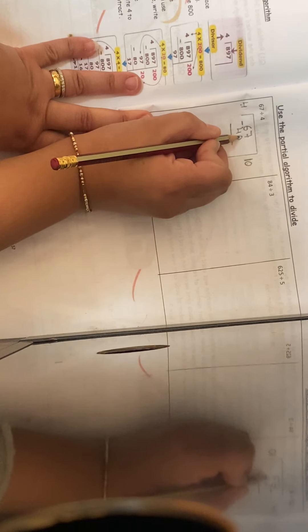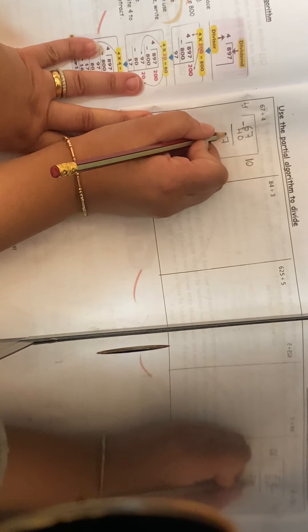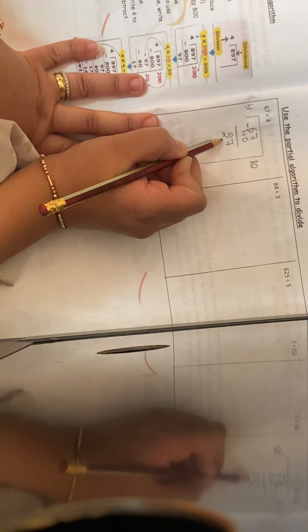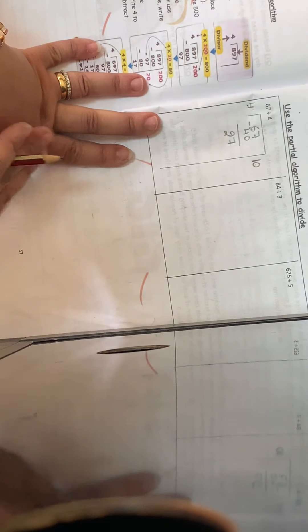Then, 7 minus 0 is 7. 6 minus 4 is 2. And start again. What times 4 gives me 24? 24. 27, sorry.